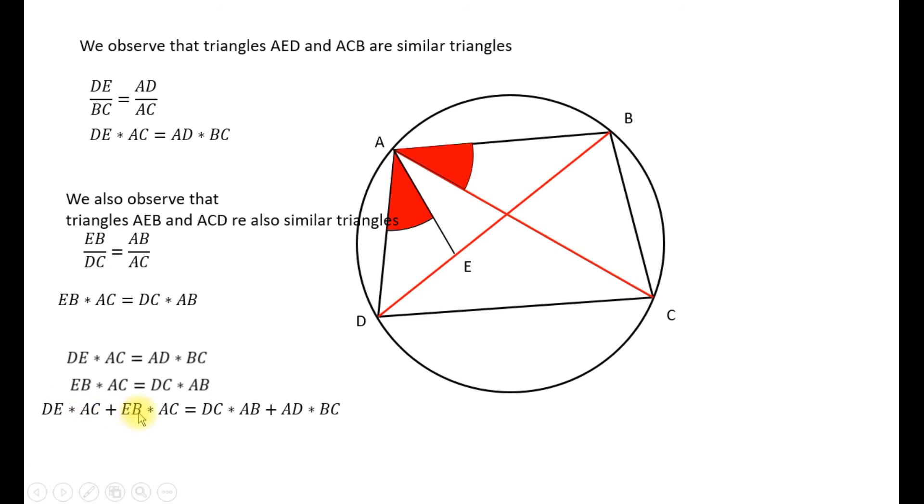Now if I factorize an AC between these two I get AC times DE plus EB. Now DE plus EB is the length DB which is the other diagonal and AC is another diagonal. So if we substitute for that sum in the brackets as BD we get the relationship that we're looking to prove and this is Ptolemy's theorem.